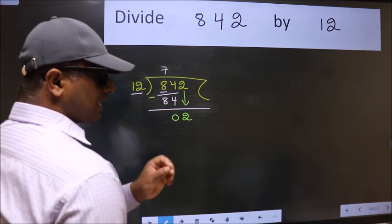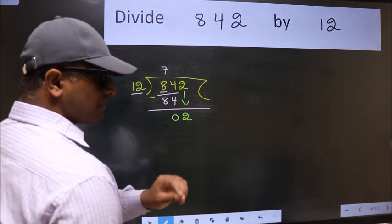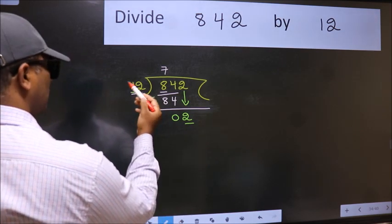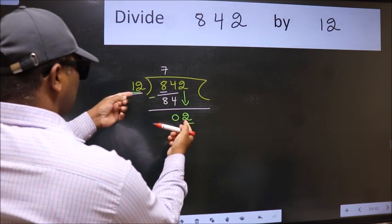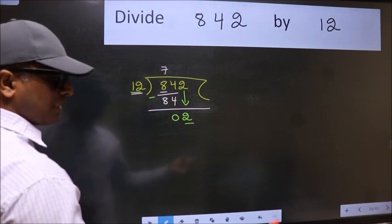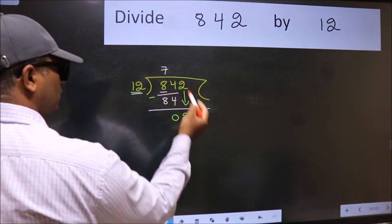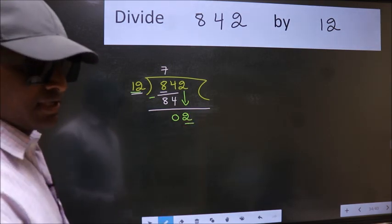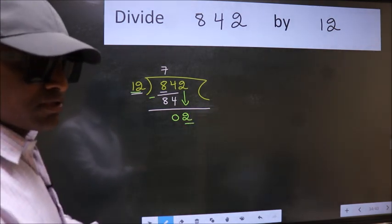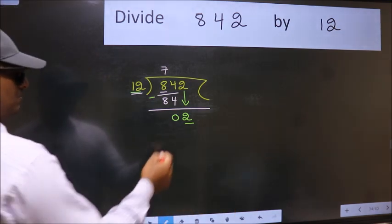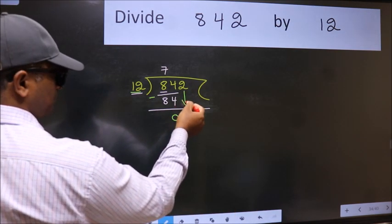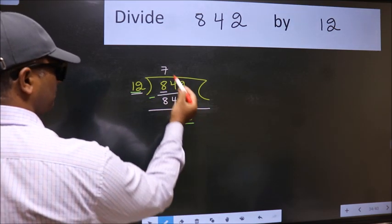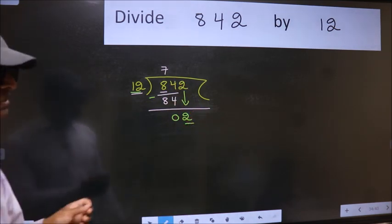After this step, the mistake happens and the mistake is this. Here we have 2 and here 12. 2 is smaller than 12. So, what many do is they directly put dot take 0 which is wrong. Why is it wrong? Because just now you brought this number down and in the same step, you want to put dot take 0 which is wrong.